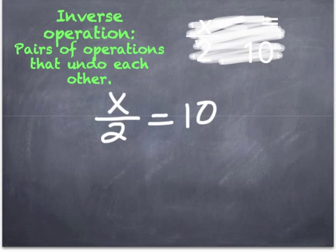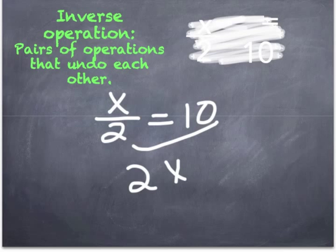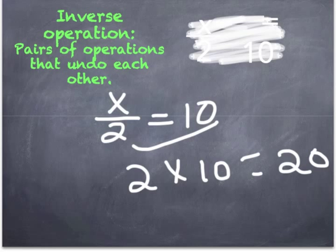The last example is showing a division equation. So the opposite operation would be to multiply. Here you would just need to multiply 2 times 10, which will give you what X is, which is 20. So in essence, your answer would be X equals 20.